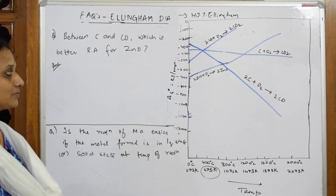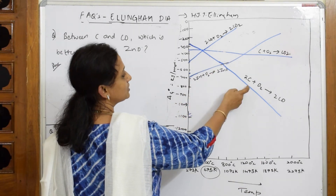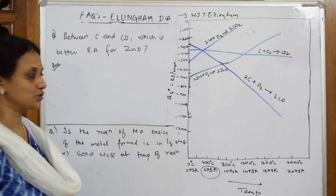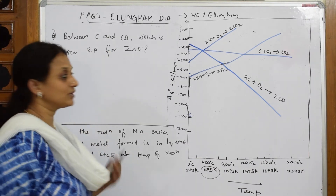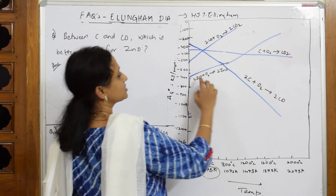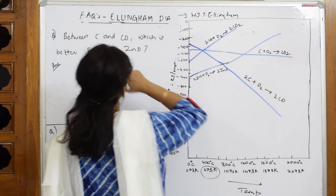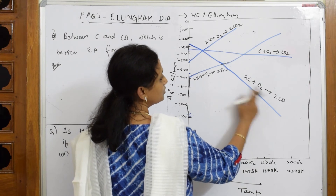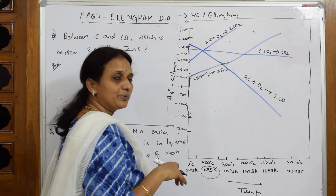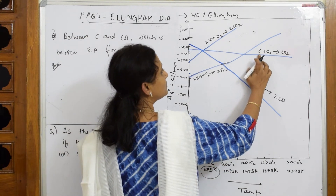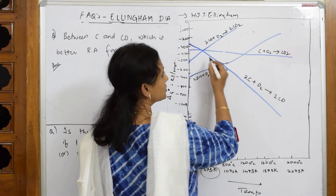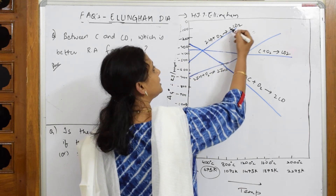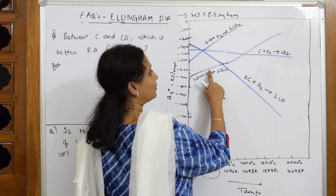Here zinc oxide is on this line, and carbon is below that, carbon monoxide is above. When no temperature is given, to compare C and CO for zinc oxide: let's identify the lines. Carbon converting to CO is one line, carbon converting to CO₂ is another, and carbon monoxide converting to CO₂ is a third line. My focus should be on these three lines.